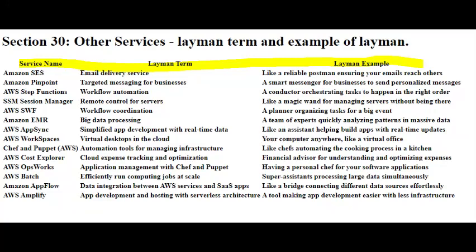AWS WorkSpaces is like having your computer in the cloud. Instead of using a physical computer, you can access your own personal computer desktop from anywhere using just about any device, like a laptop, tablet, or even your phone.